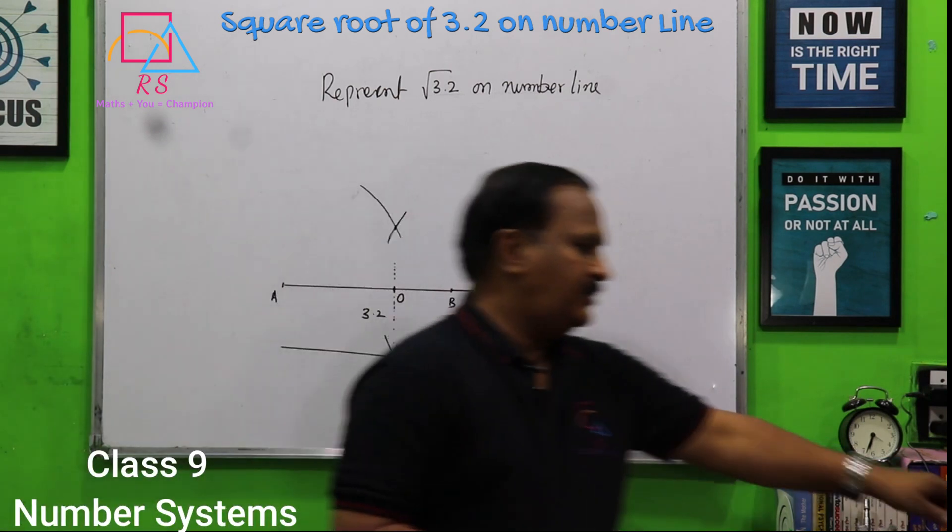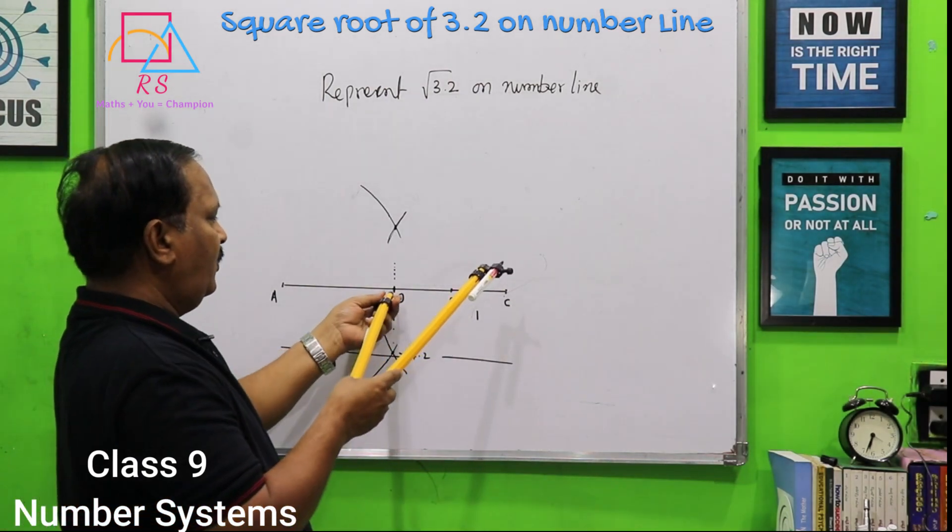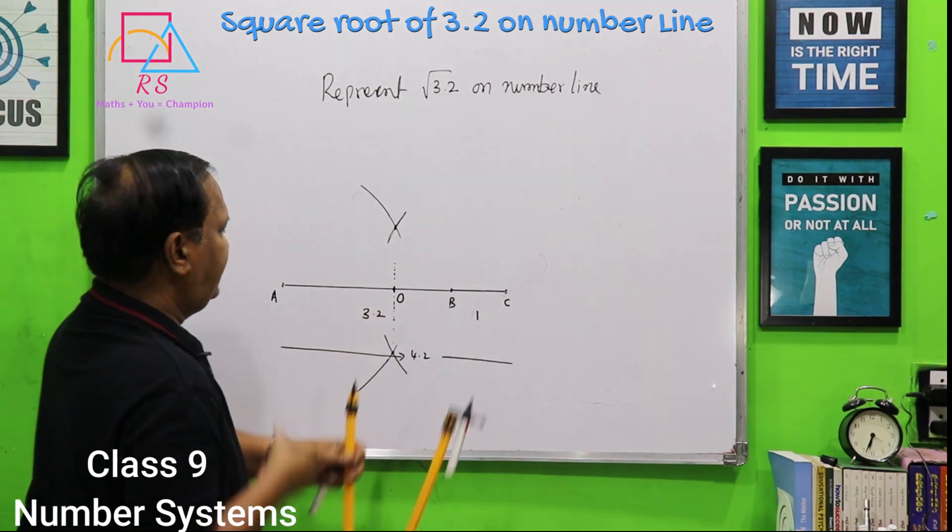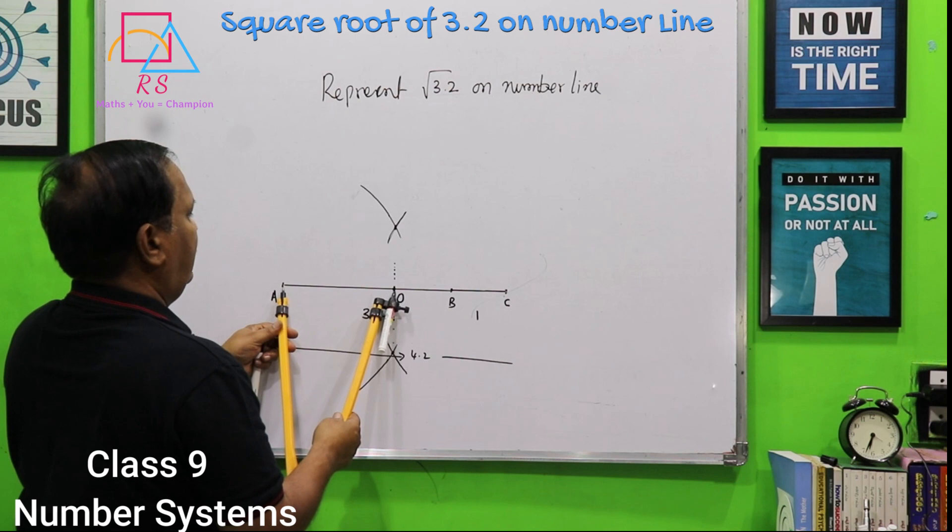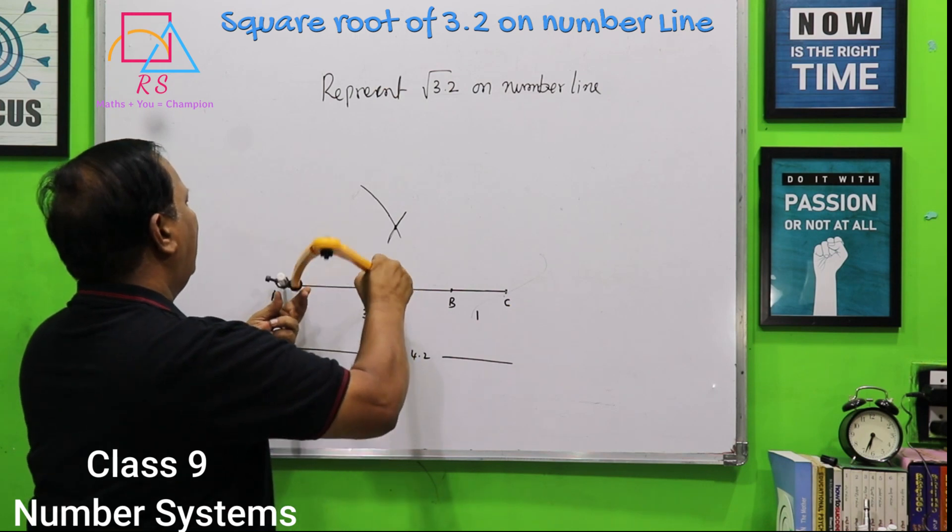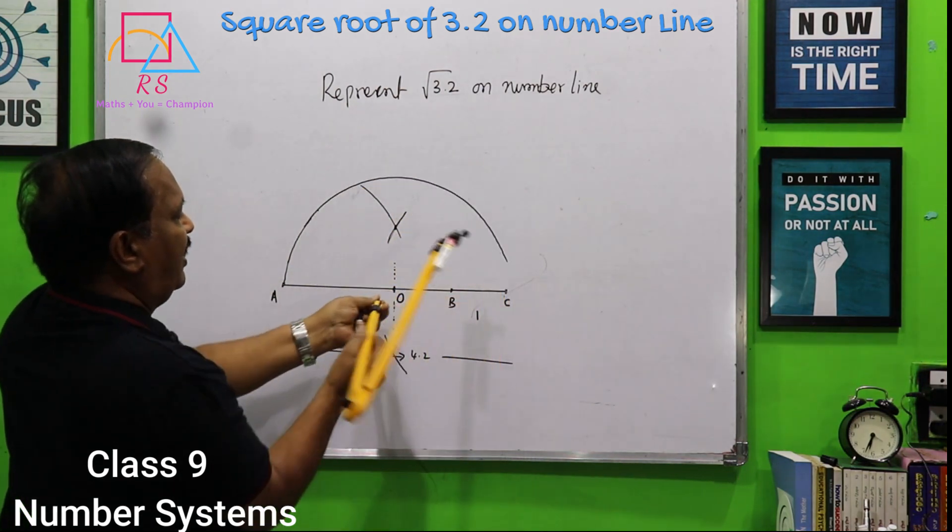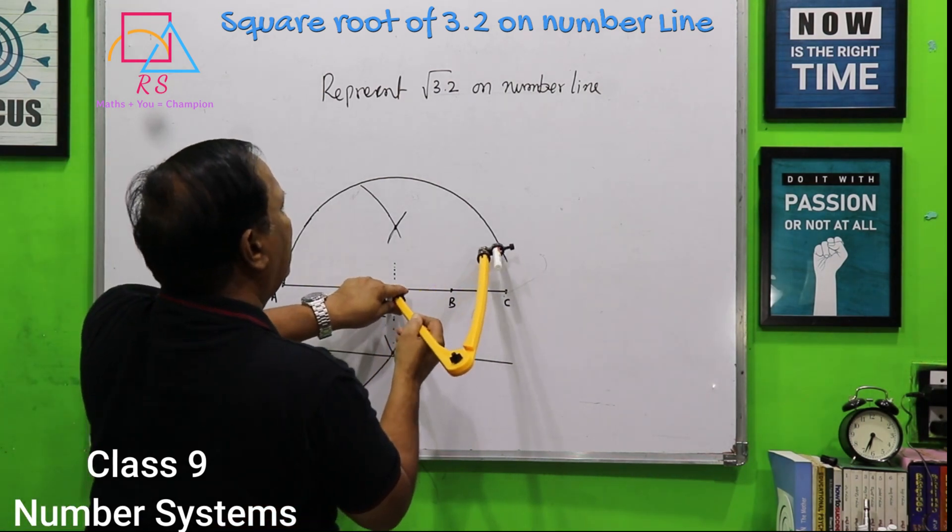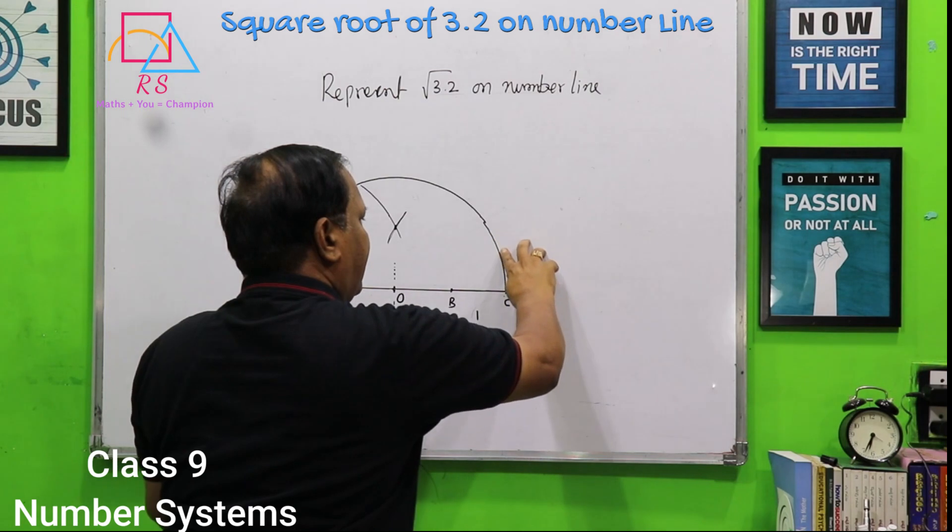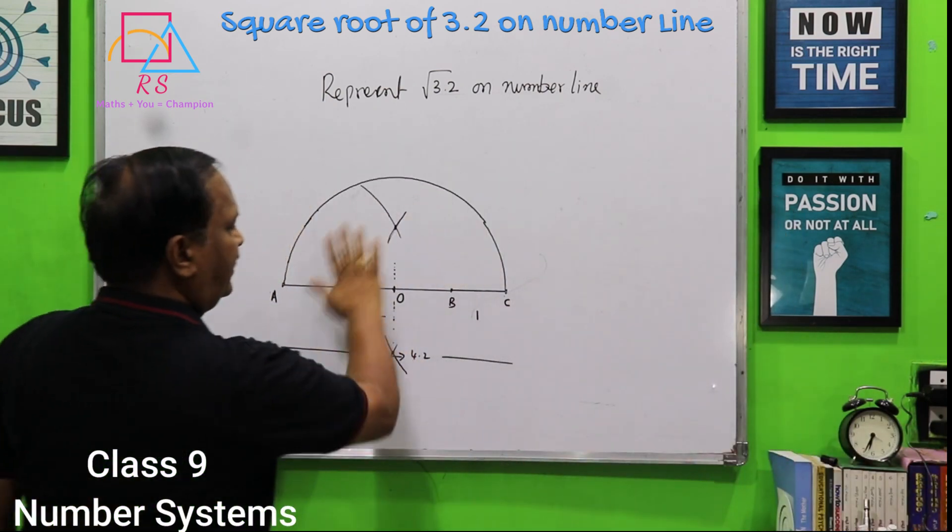Why midpoint we have to find out? Because we need to draw a circle. Using this circle, O as a center and OC as radius, you have to draw a semicircle.